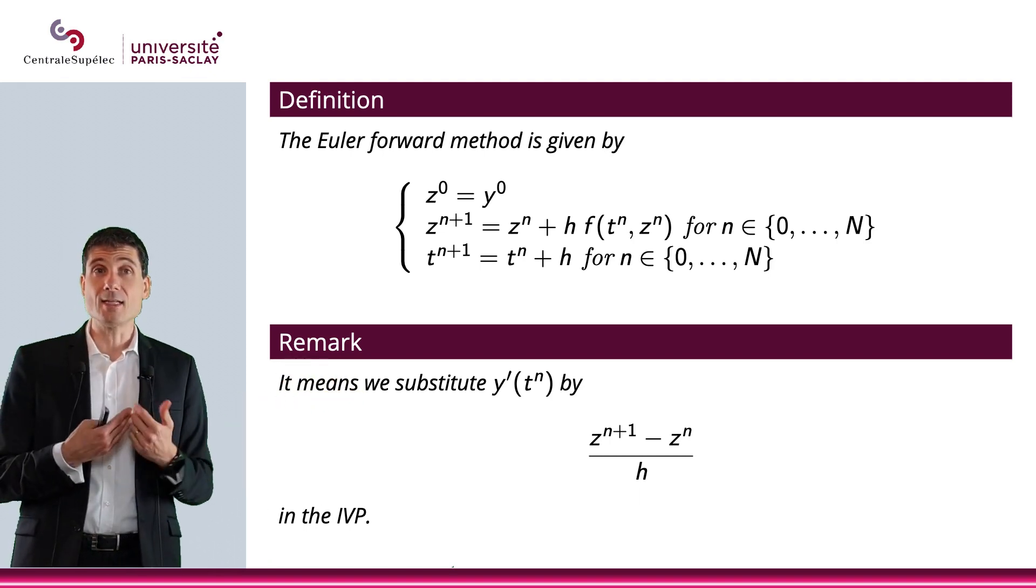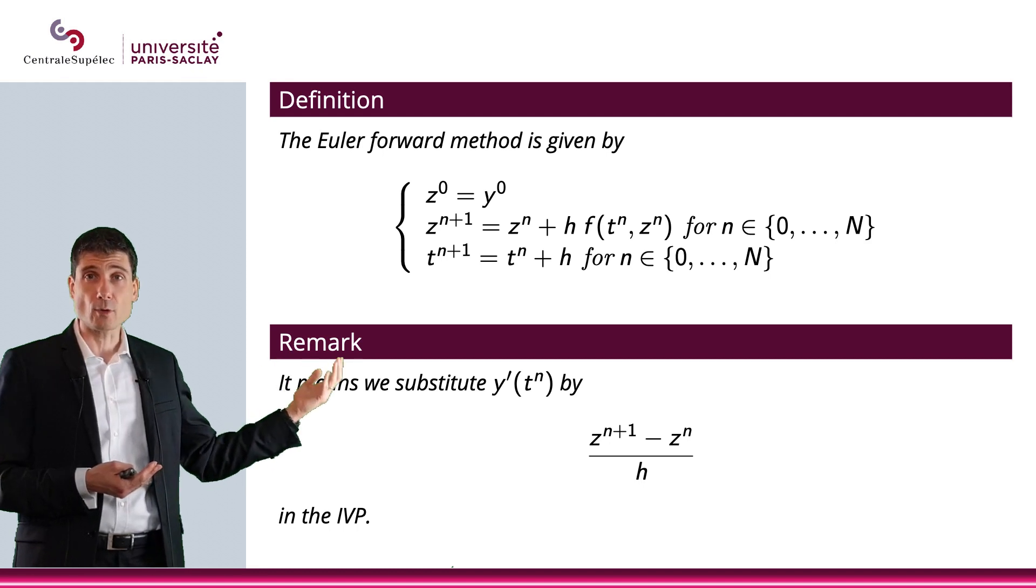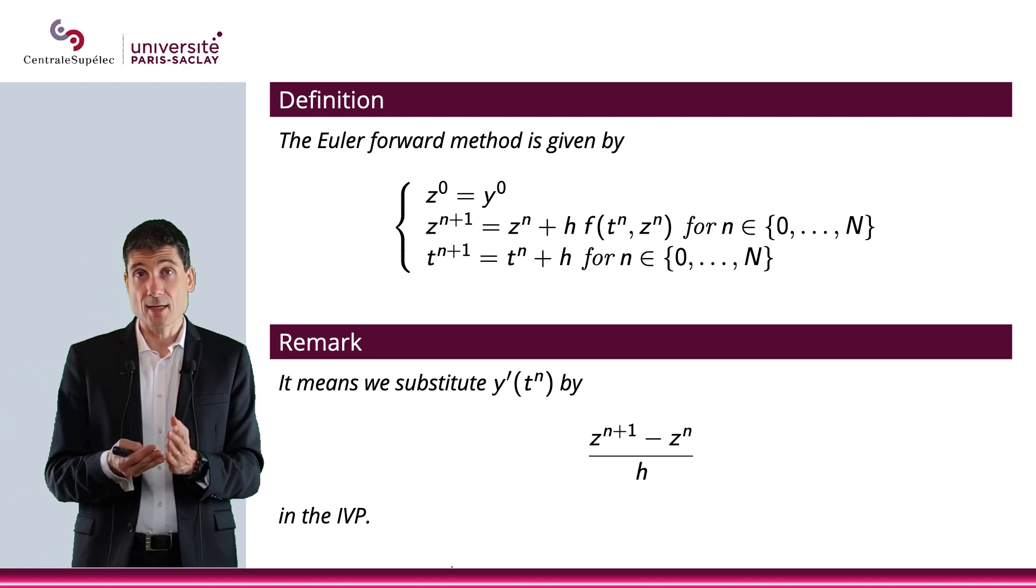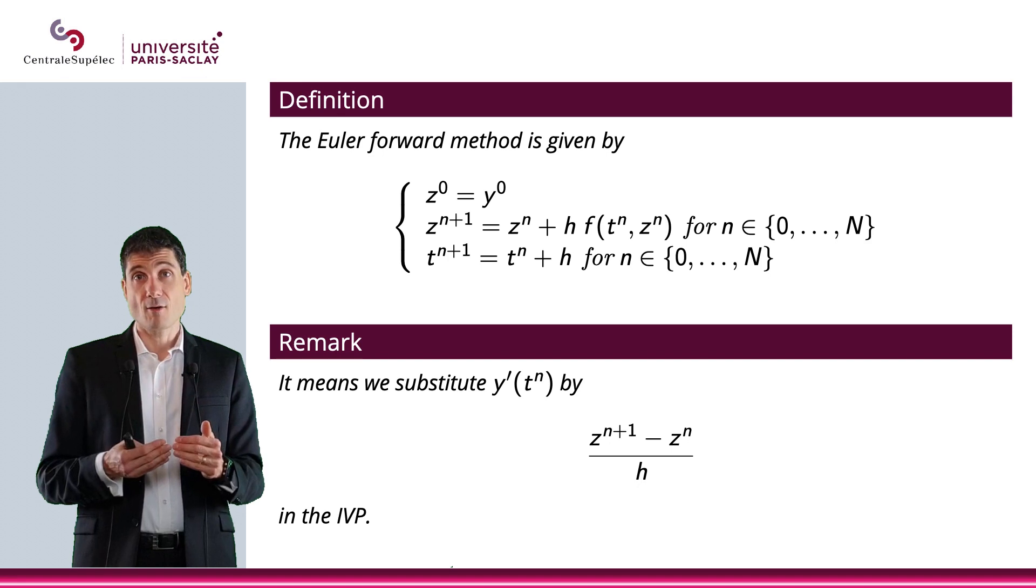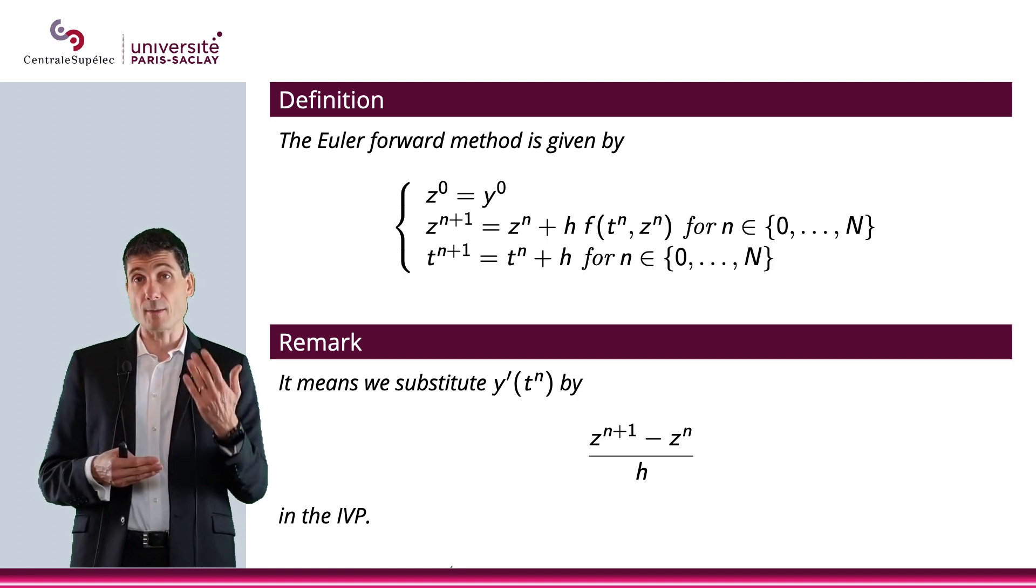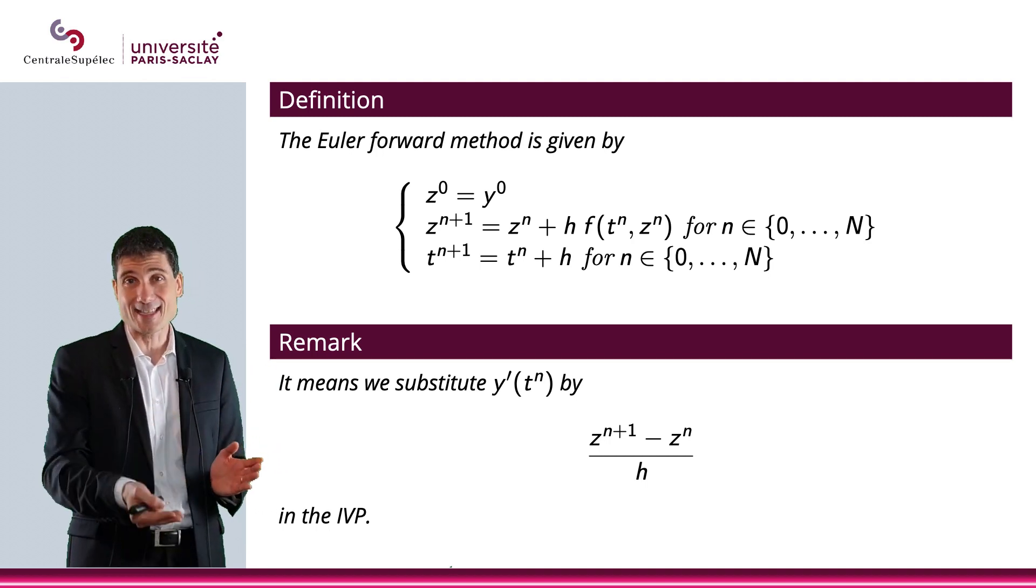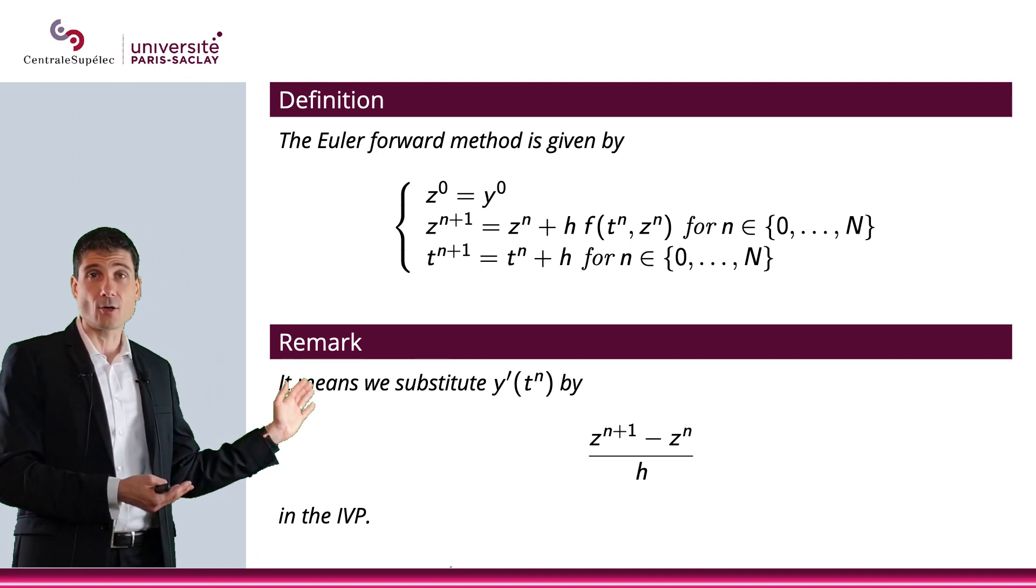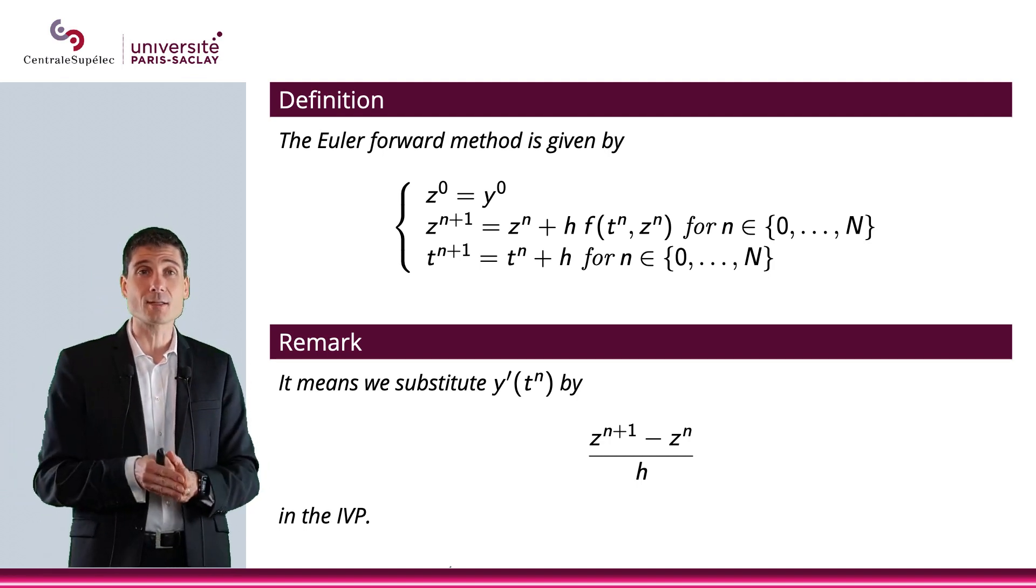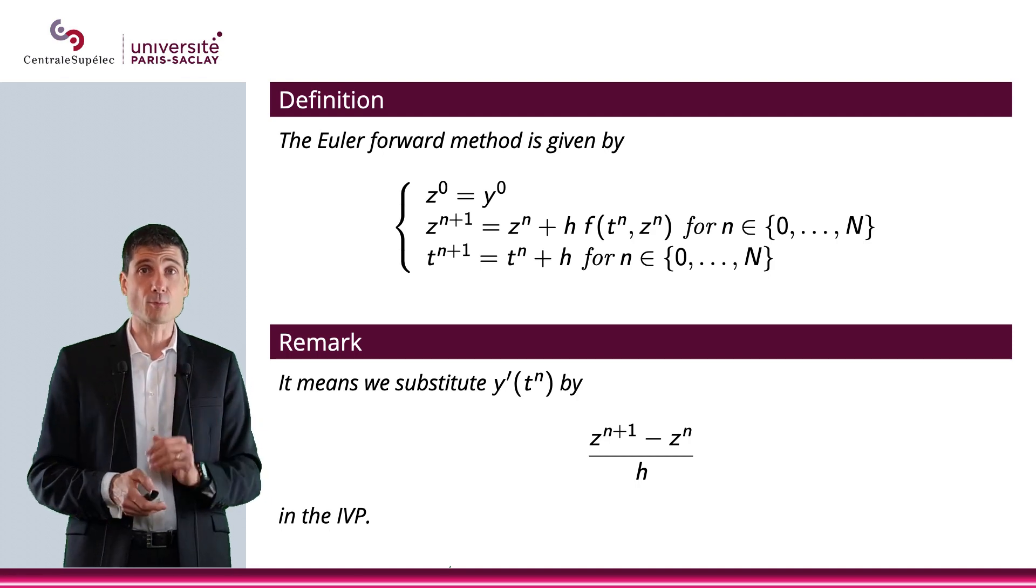And instead of putting it down below as a subscript, we're putting it as a superscript. There is a reason for this. It's because later on, when we will be doing elliptic PDEs, we will use the subscripts for space variables. And when we will actually do parabolic ODEs, then we will use the superscripts for the time variables. So in order to be consistent between chapter 7 and chapter 8, we're using the superscripts here just to simplify later on the inclusion to the parabolic ODEs. So that is the reason why we're using superscripts rather than subscripts. So don't get confused.